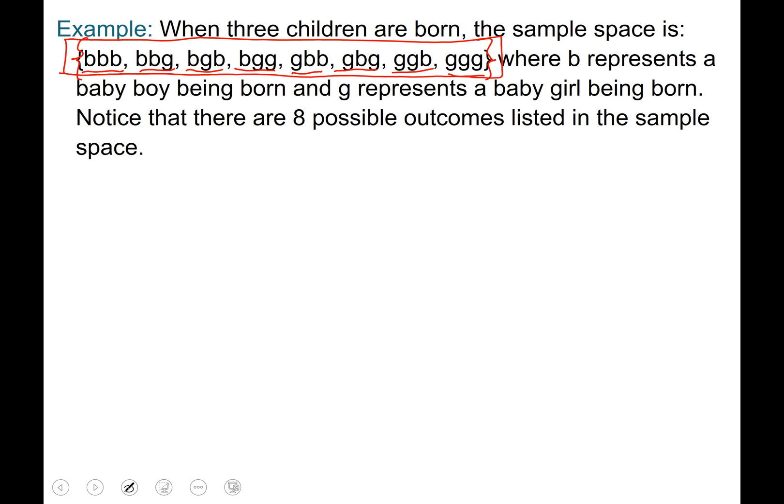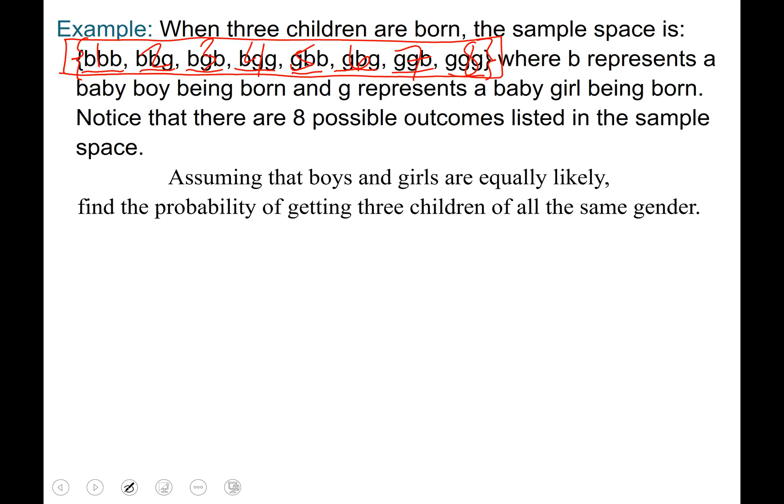So notice that there are eight possible outcomes listed in the sample space. That's one, two, three, four, five, six, seven, eight possible outcomes. All right so eight is going to be our denominator in this question here.